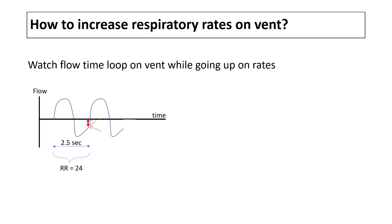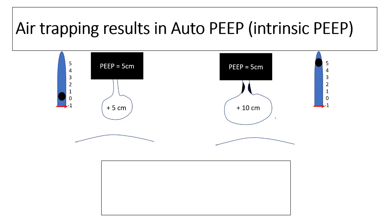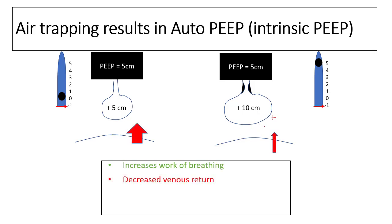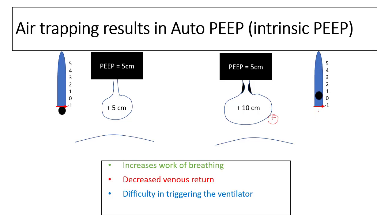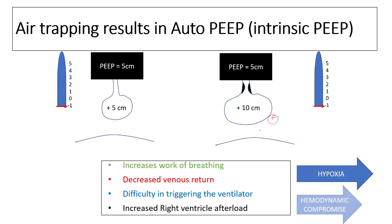Trapped air generates pressure causing auto-PEEP. Auto-PEEP increases the work of breathing because the increased positive pressure inside the thorax requires extra force to achieve the same tidal volume. It also results in decreased venous return and reduced blood flow to the right ventricle. Additionally, patients have difficulty triggering the ventilator — a patient with auto-PEEP must generate substantially more force to trigger the vent, increasing right ventricular afterload. These processes can result in both hemodynamic compromise and hypoxia.